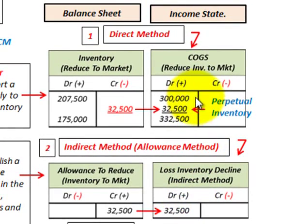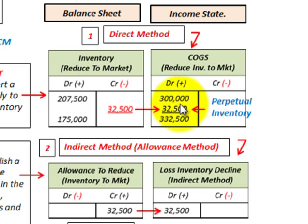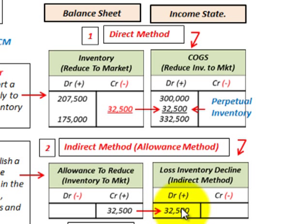With the direct method, we charged cost of goods sold on our income statement, burying this devaluation of our inventory in cost of goods sold — increasing it. With the indirect method, we recognize the loss on the income statement separately, but our cost of goods sold remains at $300,000. So the indirect method does not affect cost of goods sold.